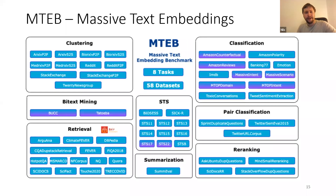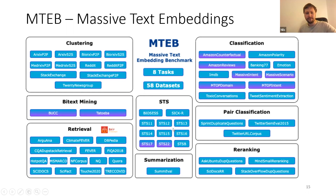This year we published the Massive Text Embedding Benchmark, which is a follow-up work put more broadly in perspective. We collected different tasks where you can use embedding models: clustering, bitext mining (finding sentences with the same meaning in different languages), retrieval, semantic textual similarity, summarization, text classification, pair classification, and re-ranking.